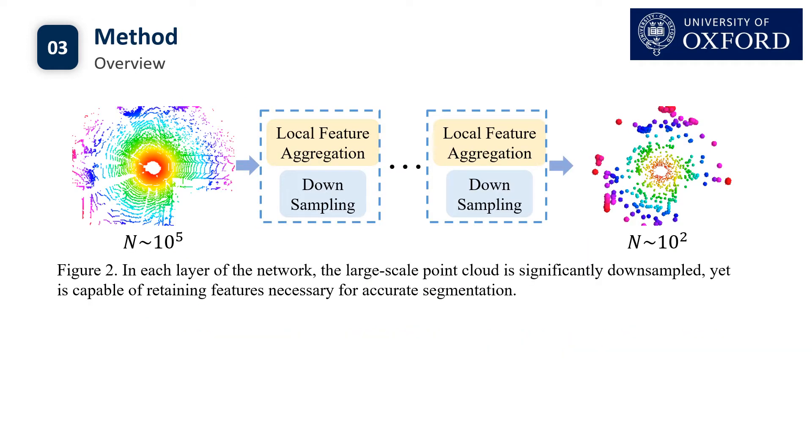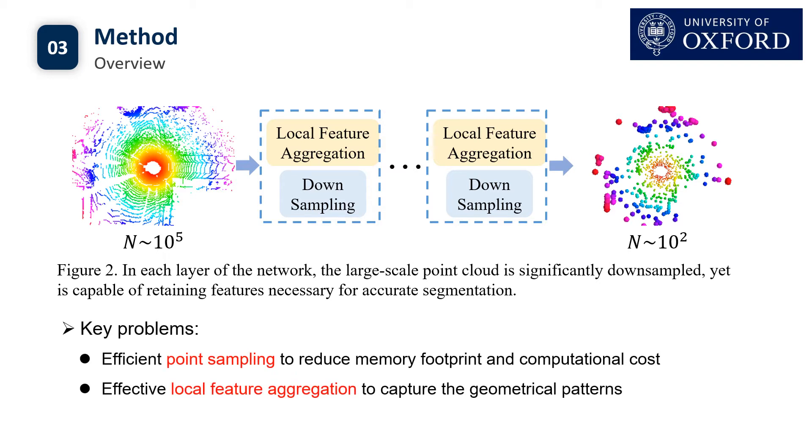To process a large-scale point cloud with millions of points, first we need efficient point sampling to reduce memory footprint and computational cost. Second, we need effective local feature aggregation to capture the geometric patterns.